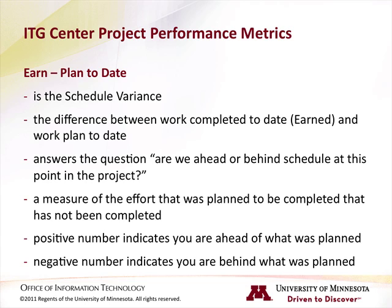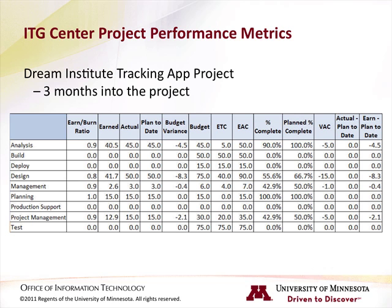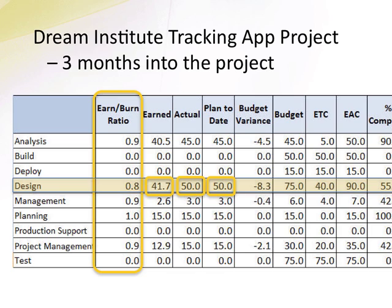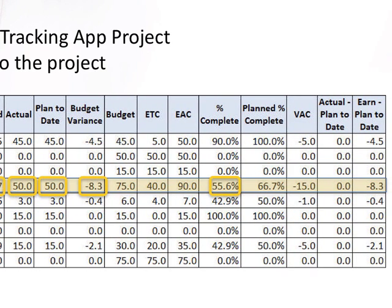Let's see an example of these metrics in the Dream Institute Tracking App project, which is now 3 months along. We can see that the earned-burn ratios have gone down a little bit on a couple of the activities, indicating that not as much is being accomplished as was planned. Looking specifically at the design activity, actuals versus planned to date look good. However, earned is a little bit lower — remember, if everything is going according to plan, earned should equal actuals. Looking at the budget variance, we see a negative value, indicating they are spending more time to accomplish the work than they had planned. Percent complete versus planned percent complete also shows a difference, indicating they are not quite as far along as they had planned to be at this point.